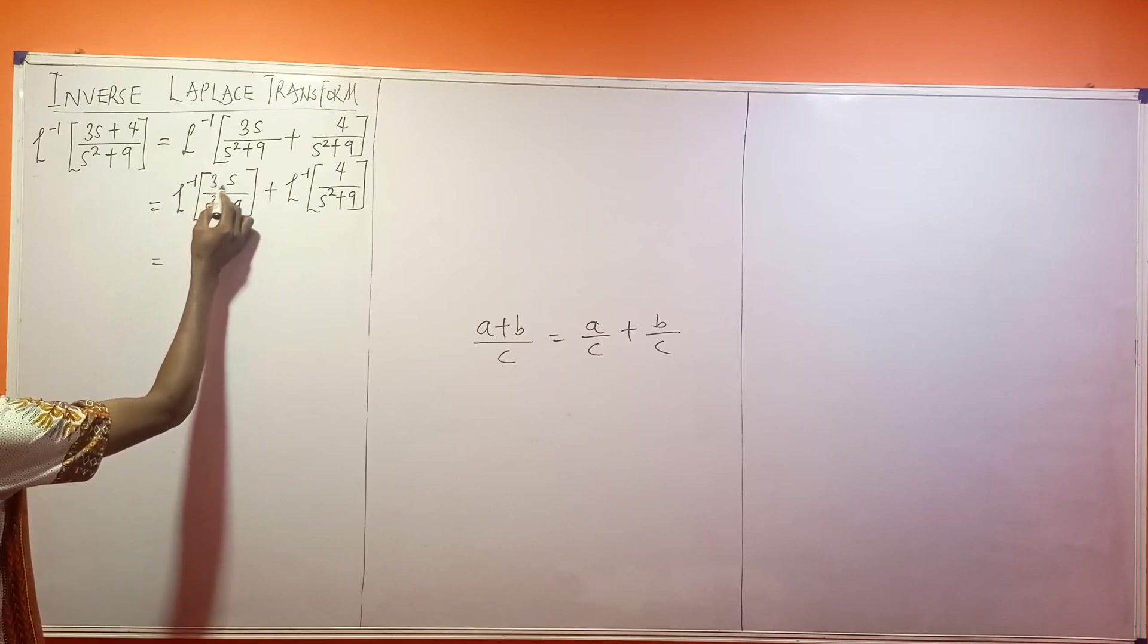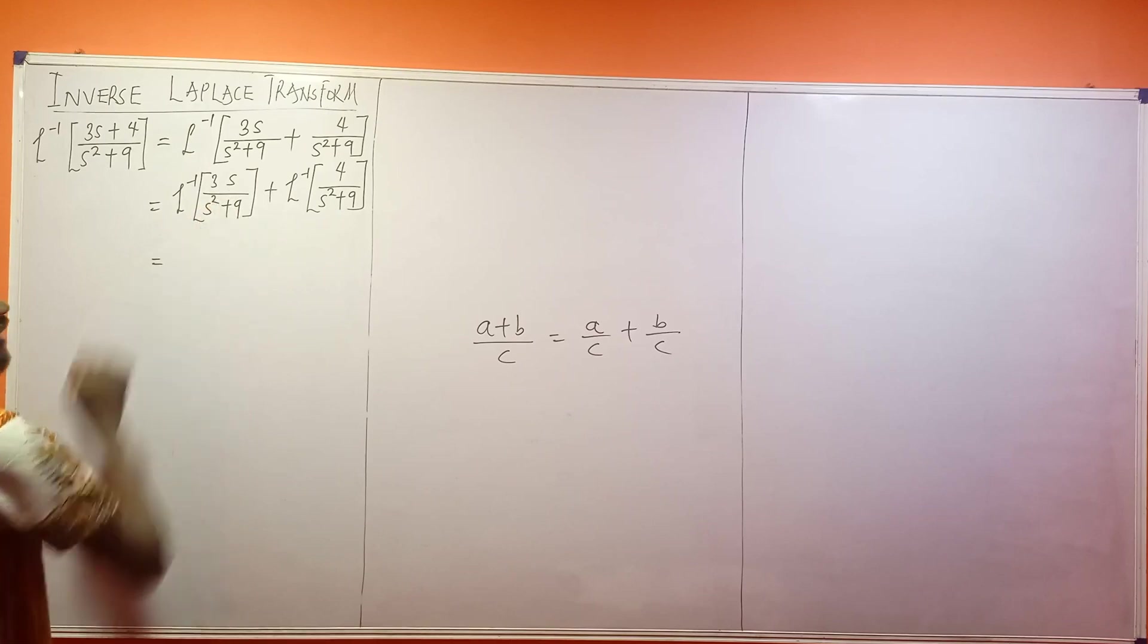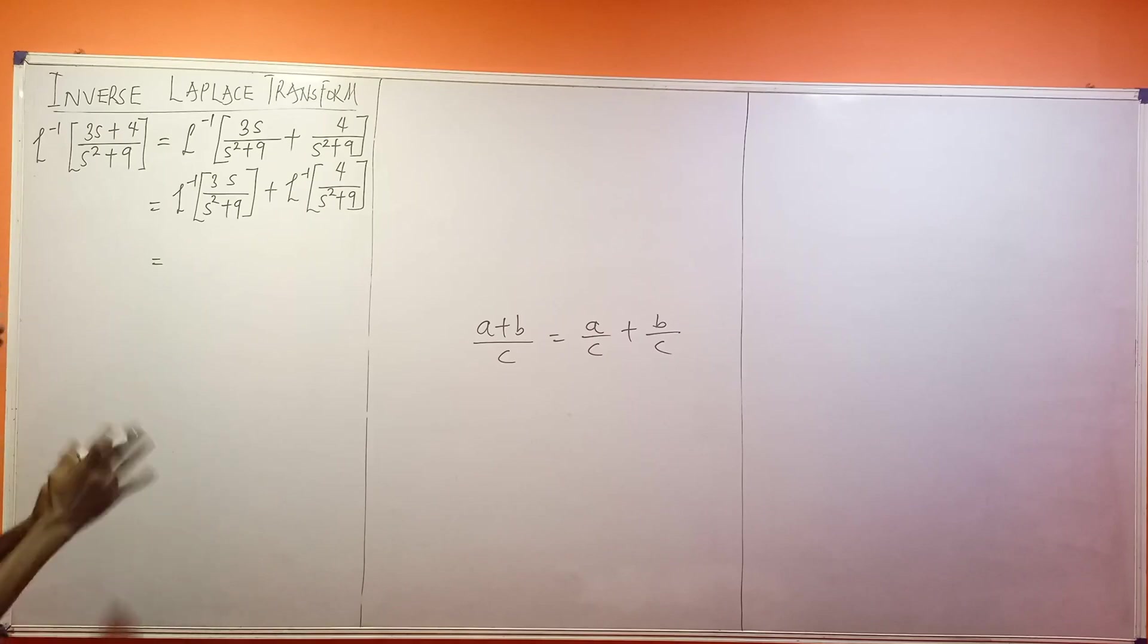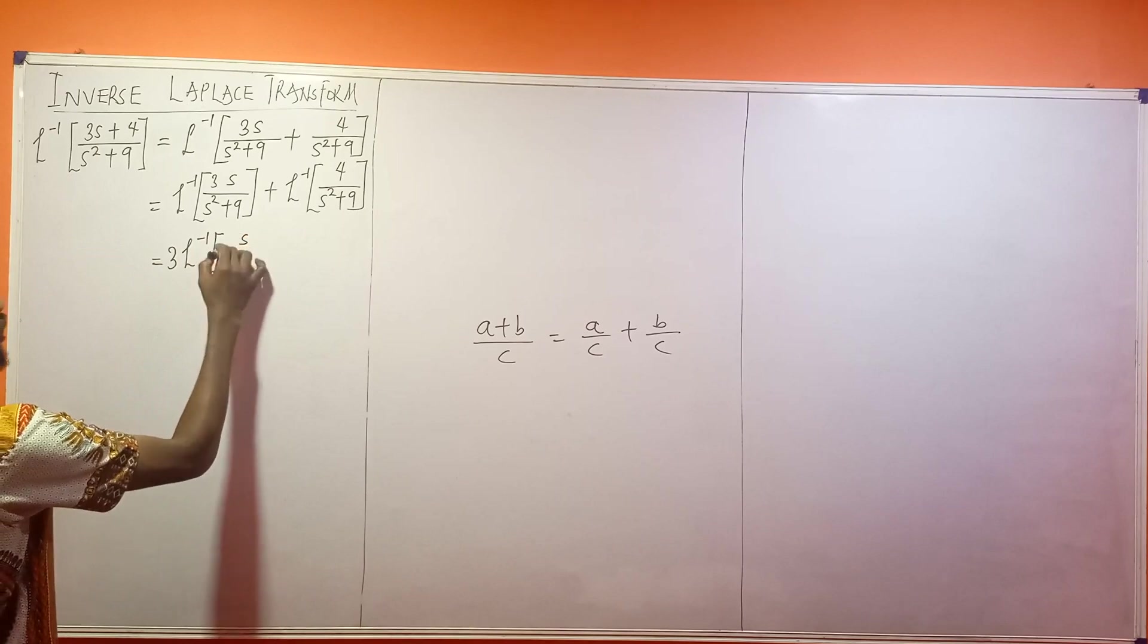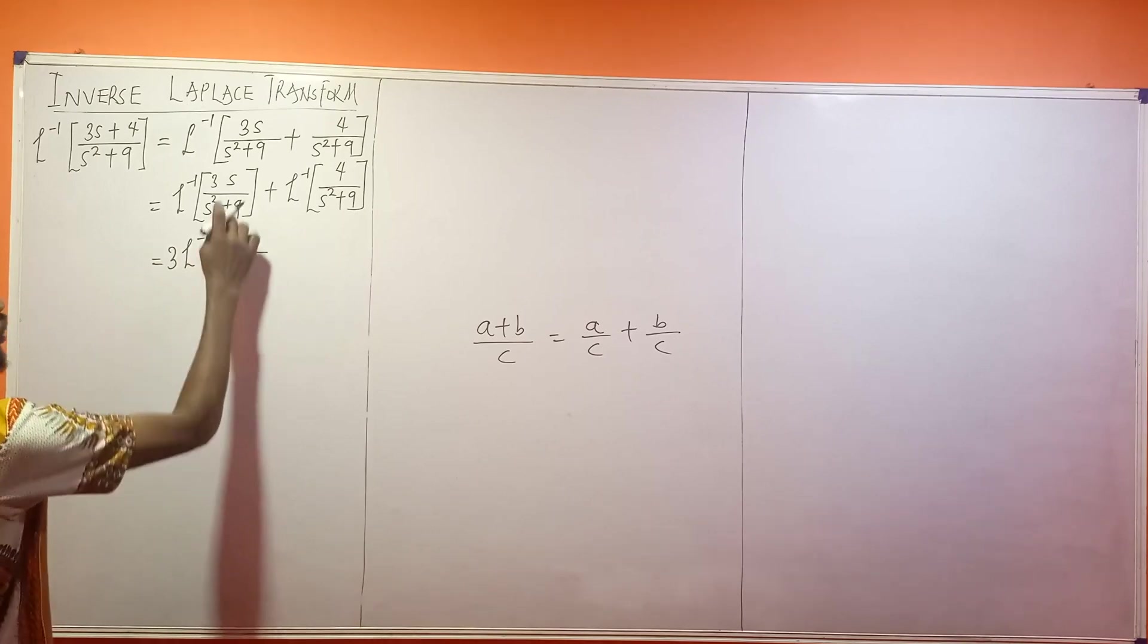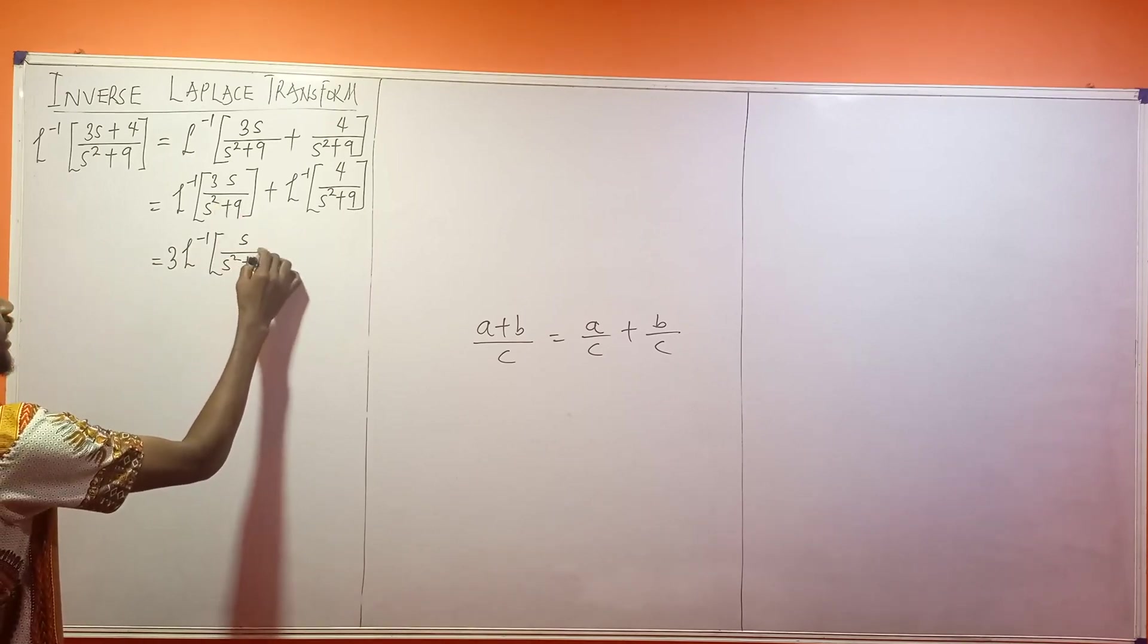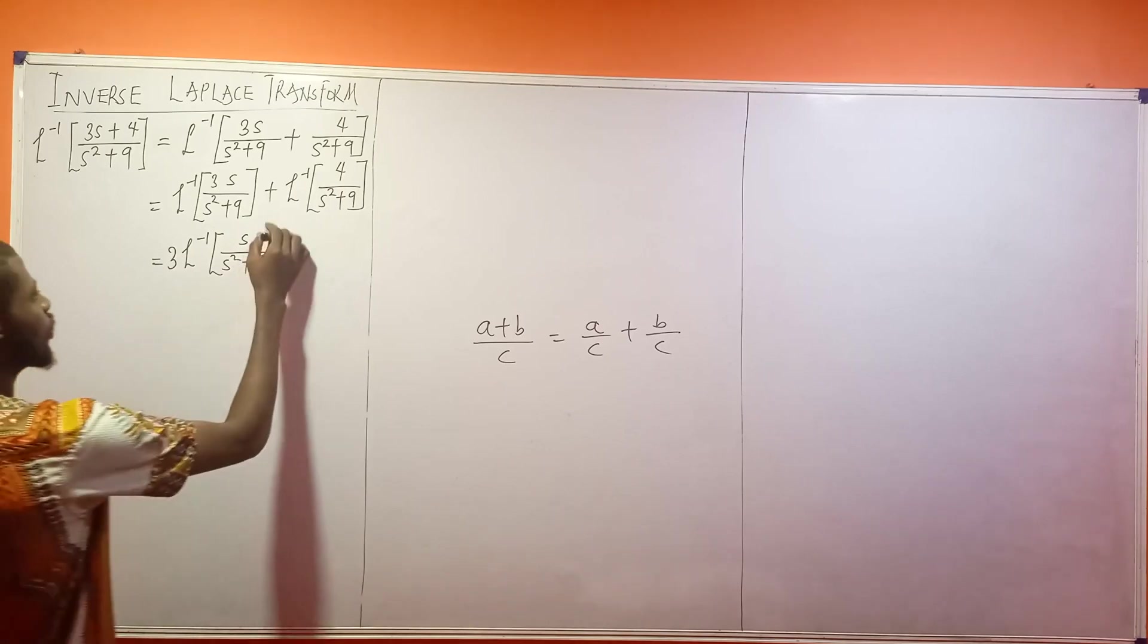I'm going to be writing this guy. So look at this. We have 3s here. This 9 is also what? 3 squared. So first of all, I can write this as 3, inverse of s divided by s squared plus, what is this 9 here? This 9 here is 3 squared.